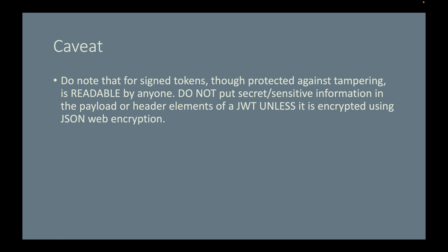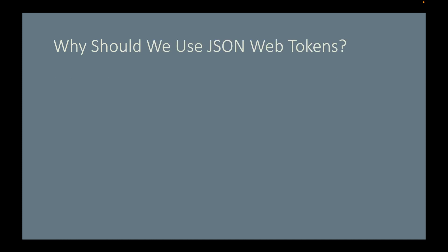Here is a caveat: even though a JWT is encoded, it is not encrypted. Although it is protected against tampering, it is readable by anyone — you just saw that pasting a JWT into an online decoder reveals all the claims. So do not put secret or sensitive information in the payload or header unless it is encrypted using something called JWE, or JSON web encryption. In this project we are not using this encryption.